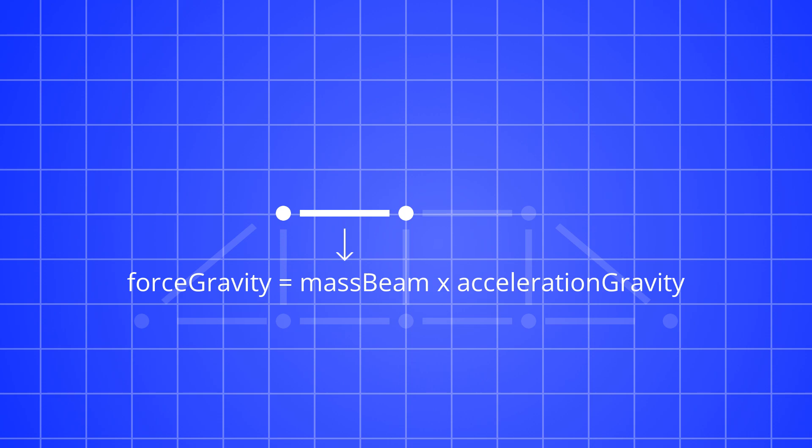So a beam that's twice as long will have twice the mass. The acceleration of gravity is simply just a constant number that will represent how quickly everything in our game world accelerates.